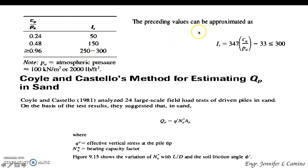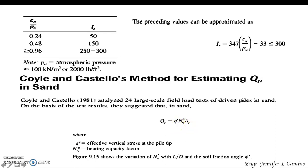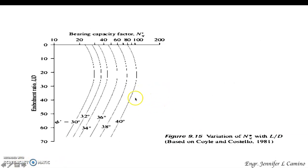We have here the approximation for the rigidity index. According to Coils and Castillo's method for estimating Q sub P in sand, the ultimate point bearing capacity Q sub P is equal to the effective vertical stress at the pile tip multiplied by N sub Q asterisk times A sub P. We need the angle of friction and the embedment ratio L over D to obtain the bearing capacity factor N sub Q asterisk.